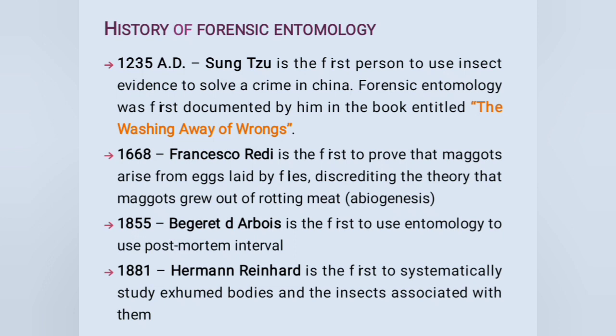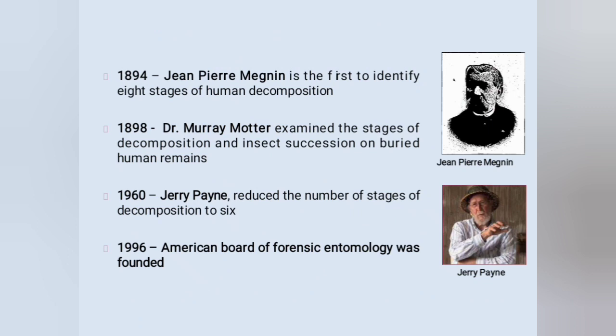In the year 1881, Herman Reinhard was the first to scientifically study exhumed bodies and the insects associated with them. In 1894, Jean Périmagnin was the first to identify eight stages of human decomposition. In 1898, Dr. Murray Motter examined the stages of decomposition and insect succession on buried human remains. In 1960, Jerry Penne reduced the number of stages of decomposition from eight to six. In 1996, the American Board of Forensic Entomology was founded.